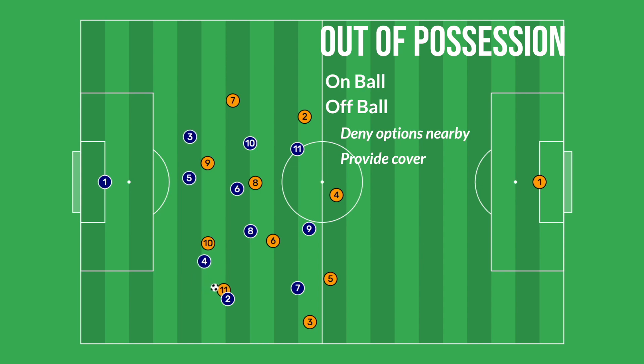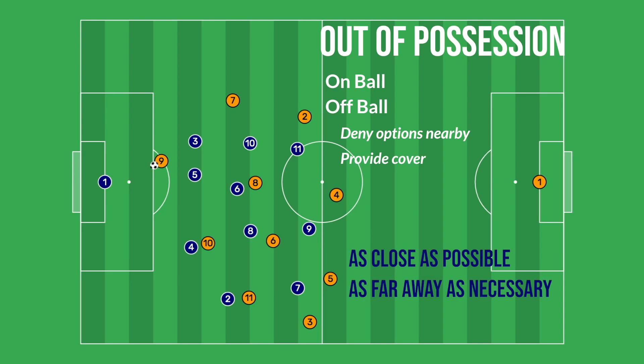Similarly, defenders far away from the ball providing balance need to consider being close enough to provide cover for teammates around them, but not so close that they will get beat by the same movement or run. So when defending, players need to think of their spacing off the ball as: as close as possible, as far away as necessary — meaning as close as possible to provide cover for teammates, but as far away as necessary to deny options away from the ball and not get beat at the same time as a teammate.